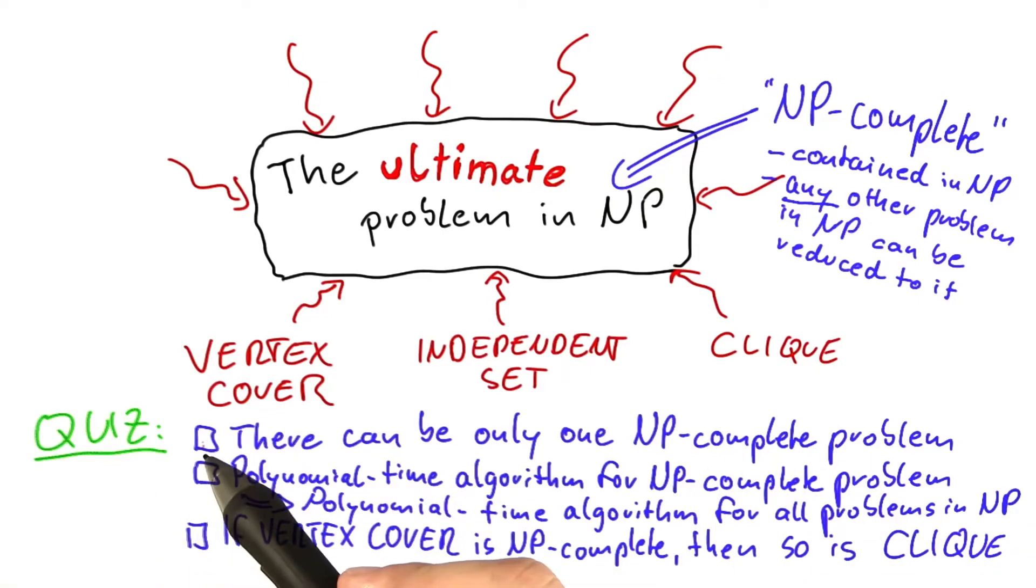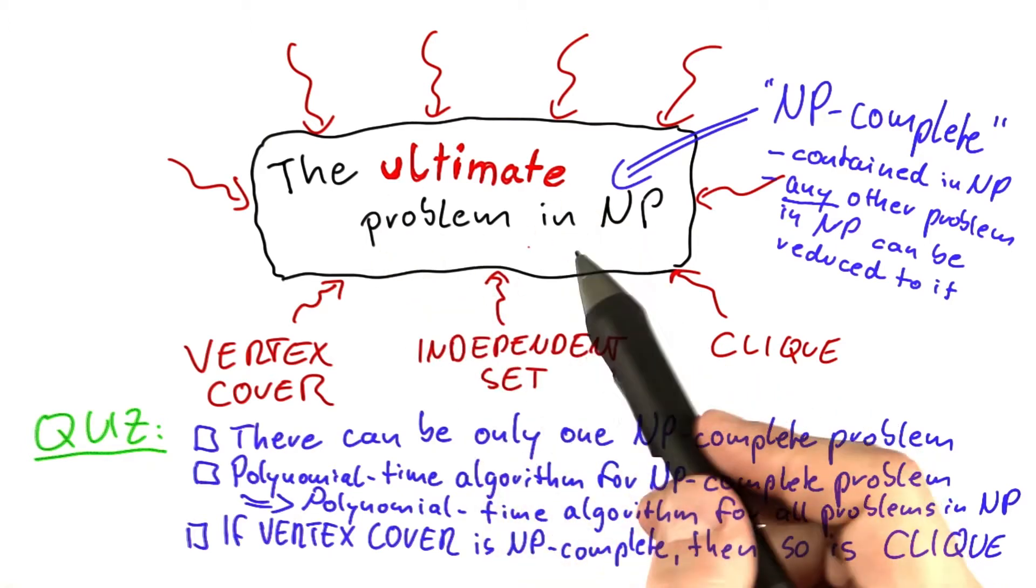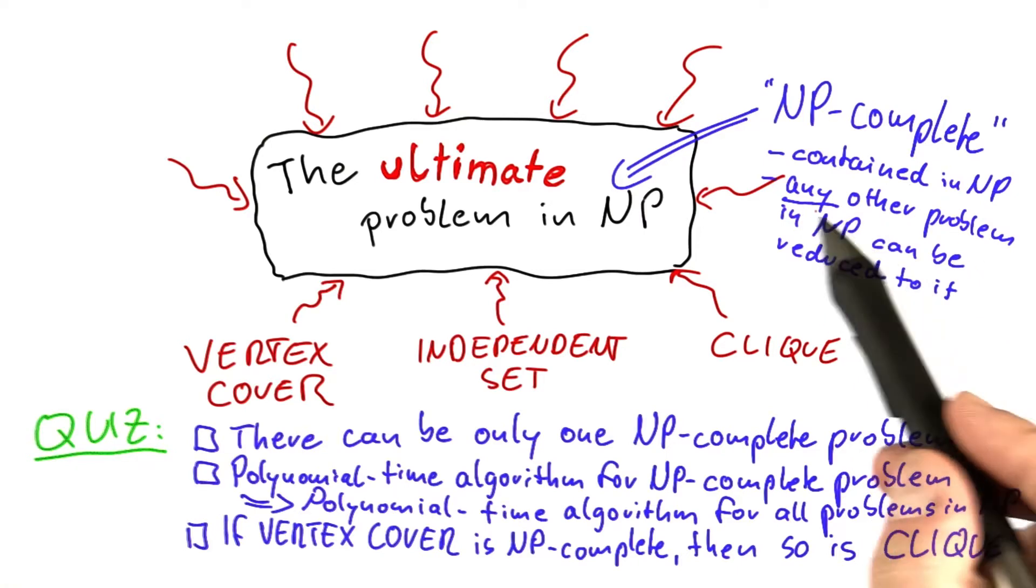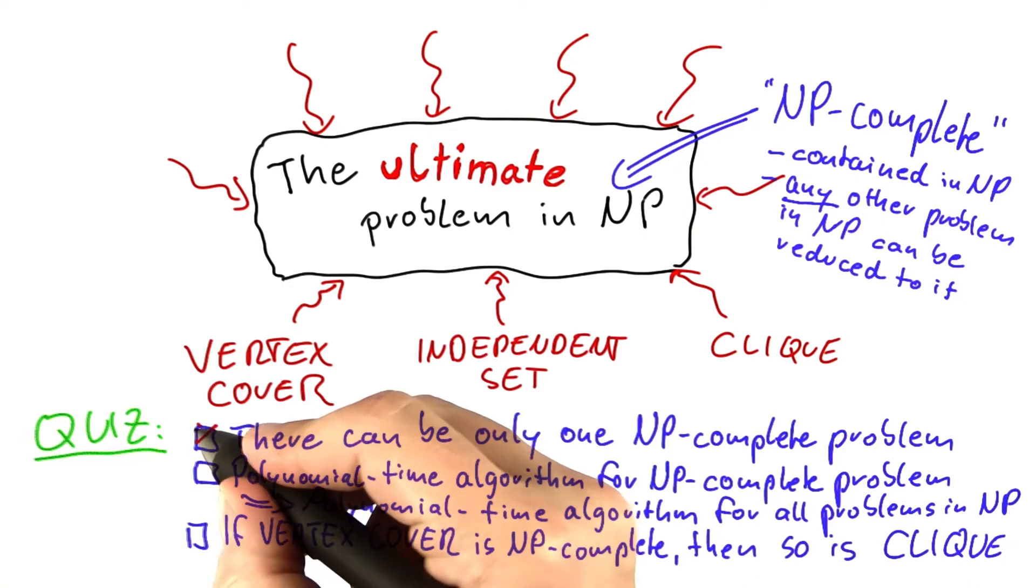So the first statement, you might be tempted to think that because I just called it the ultimate problem in NP. But actually, when you look at the definition of an NP-complete problem, it just means that any other problem in NP can be reduced to it. So there could be multiple NP-complete problems as long as they have the same hardness. So this here is not true.